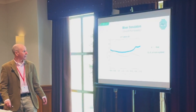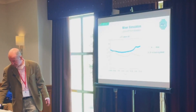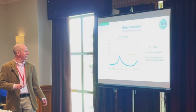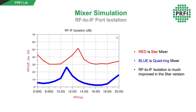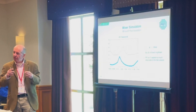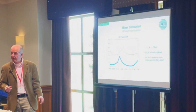Looking at the LO to IF isolation, the quad ring performs slightly better than the star mixer. However, for RF to IF isolation the star does a lot better. That's because with the quad ring we're extracting the IF from the RF port, which gives less scope for isolation. Whereas with the star mixer we have proper virtual earths of the RF on the IF port.